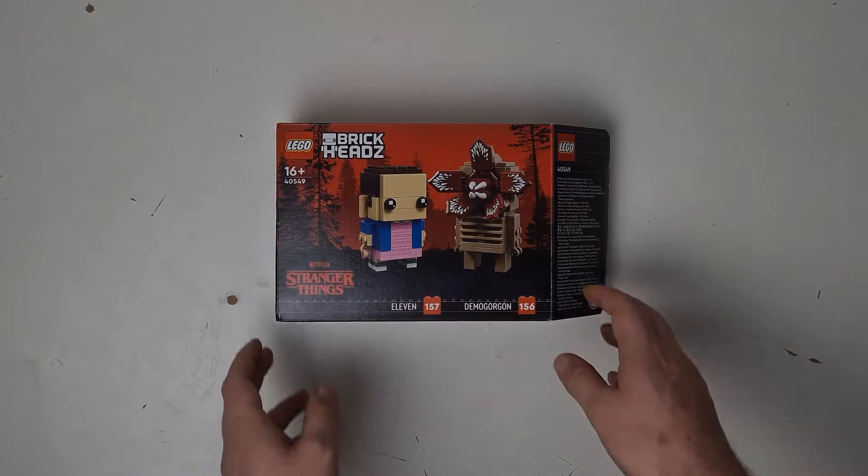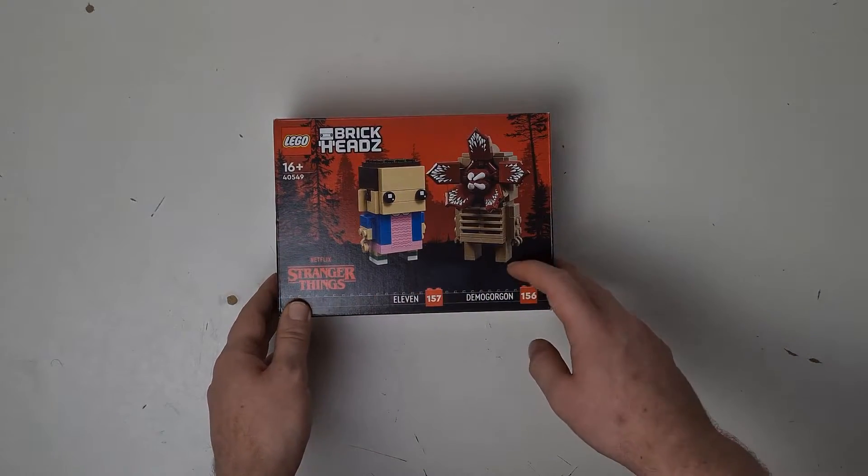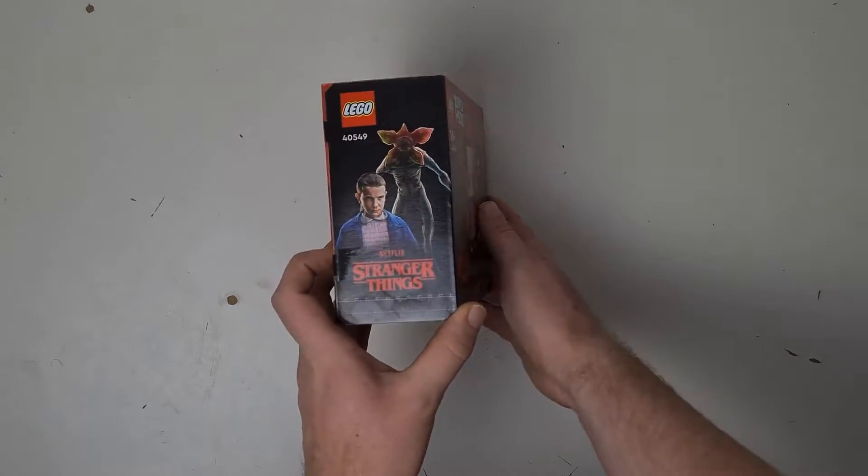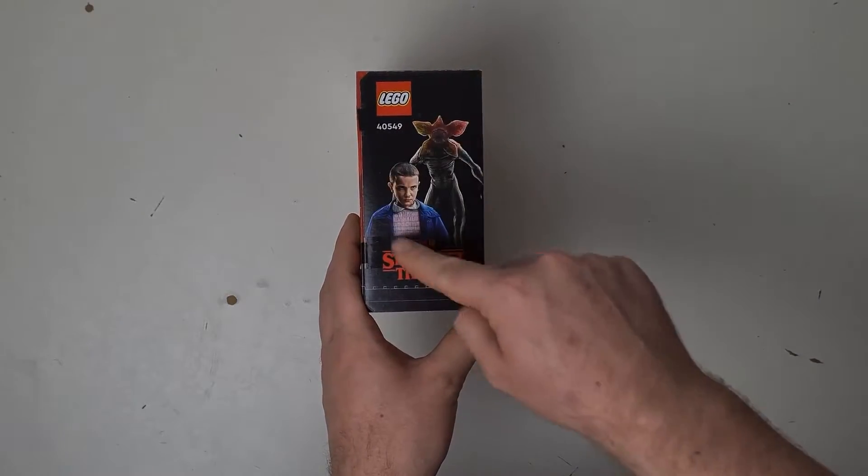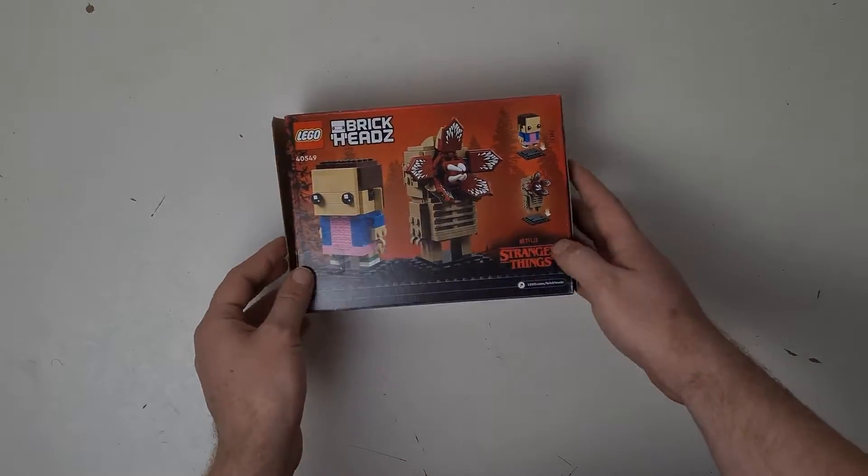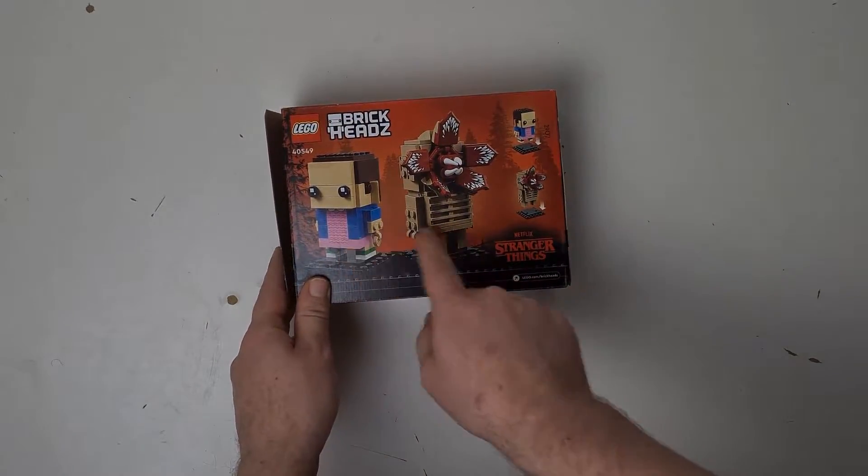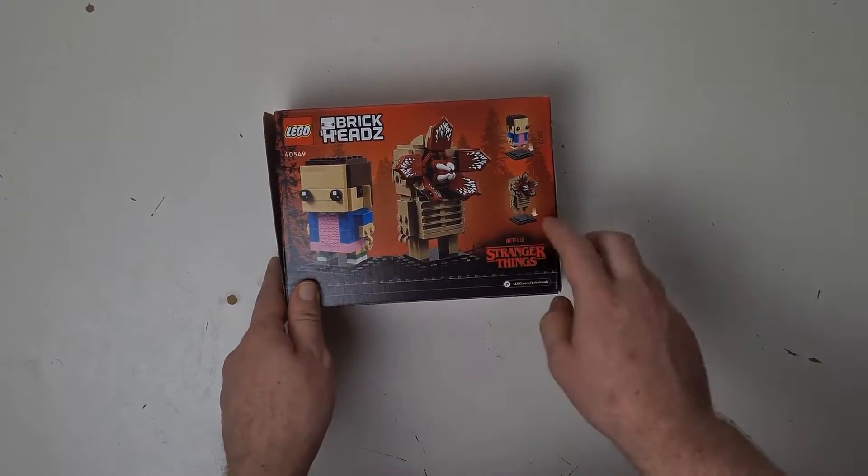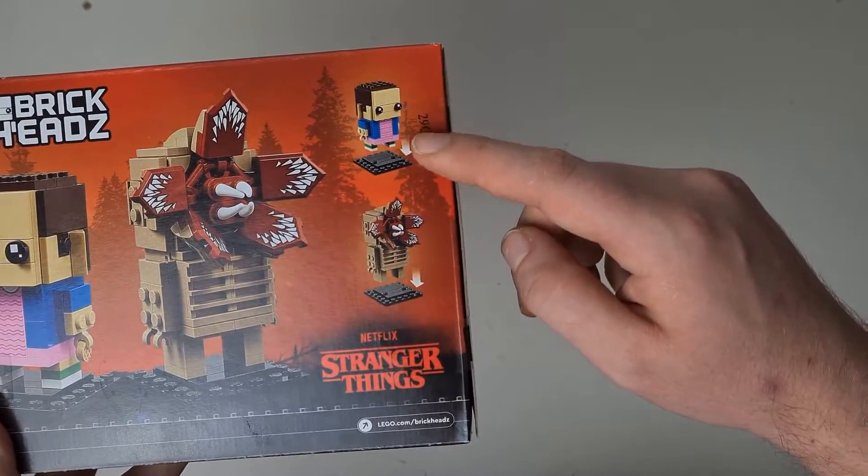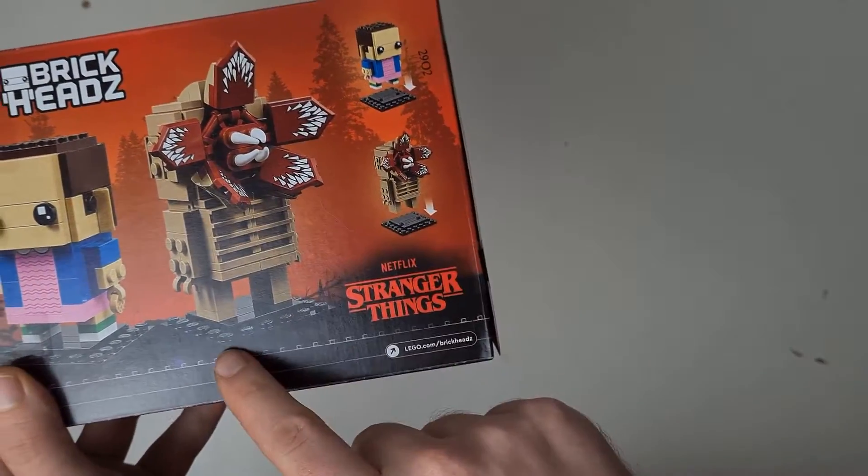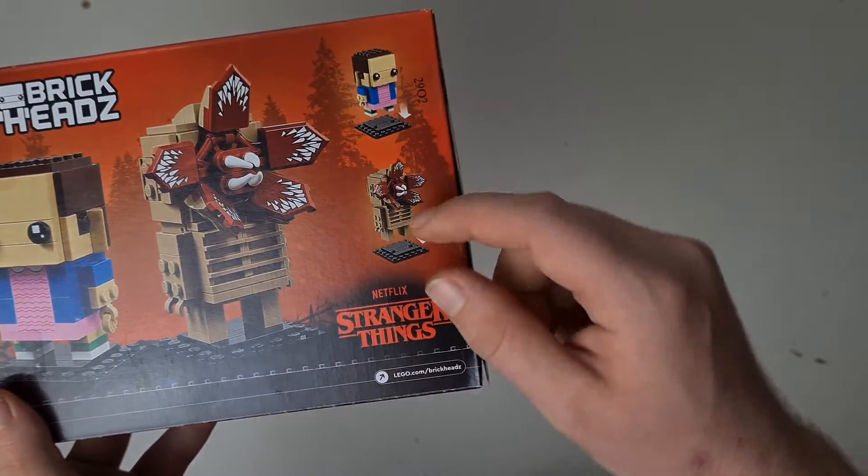The box has the image of both sets on the front and then the series photo on the side, and then essentially the same photo on the back just facing different directions so you can see the different sides. And then on here you've got the photo showing that they're removable from the base plates as well, so you can store them without the base plates.